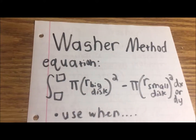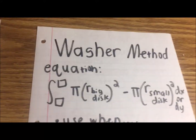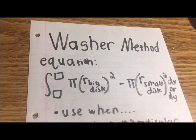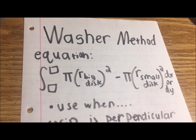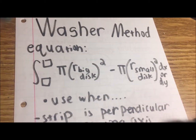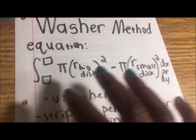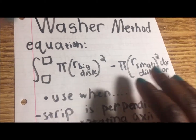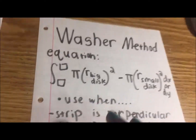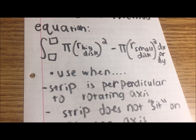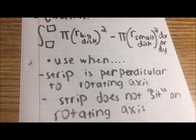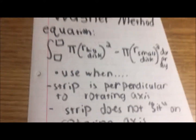Now I'm going to do a tutorial on the washer method. This is the equation for the washer method: the integral of pi R big disk squared minus pi R small disk squared dx or dy. You use the washer method when the strip is perpendicular to the rotating axis and when the strip does not sit on the rotating axis.